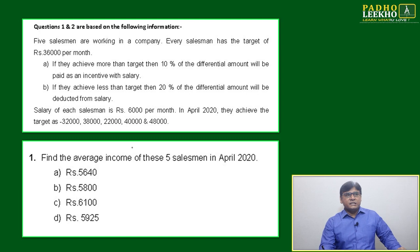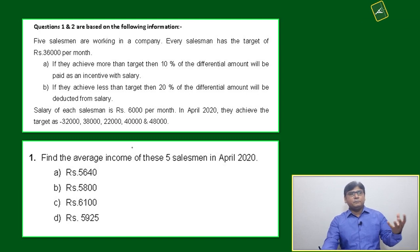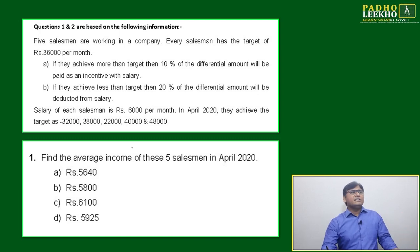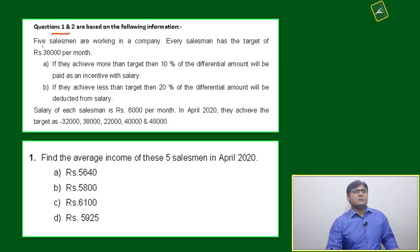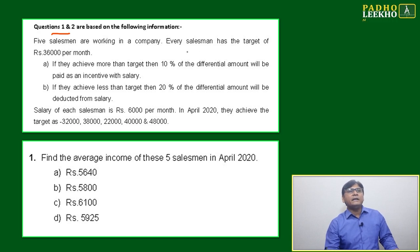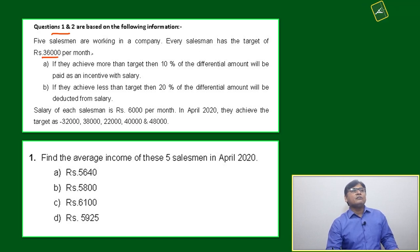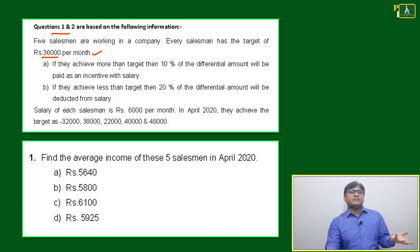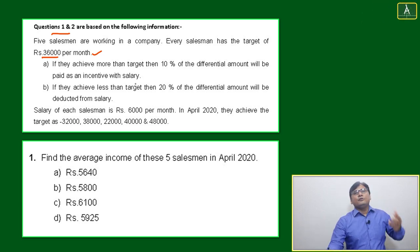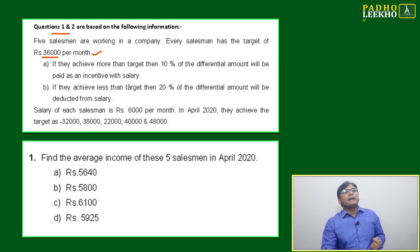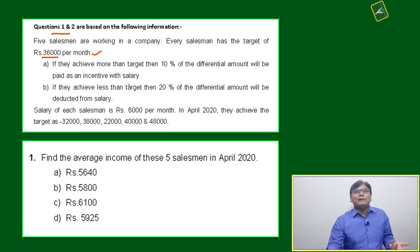I will look at a few questions based on averages to give you more clarity. Questions one and two are based on the following information: five salesmen are working in a company, and every salesman has a target of 36,000 per month. This is the fate of salesmen — nobody can change it. If you are in sales, you have to meet the target, otherwise your salary will be deducted.